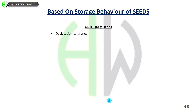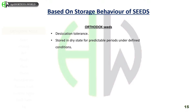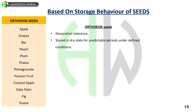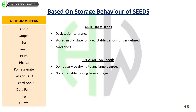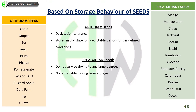Lastly, classification based on seed storage. Orthodox seeds are desiccation tolerant during development and may be stored in a dry state for predictable periods under defined conditions. Examples are apple, grapes, bael, peach, plum, falsa, pomegranate, passion fruit, custard apple, date palm, fig, and guava. Recalcitrant seeds do not survive drying to any large degree and are thus not amenable to long-term storage. Examples are mango, mangosteen, citrus, jackfruit, loquat, litchi, rambutan, avocado, Barbados cherry, carambola, durian, breadfruit, and cocoa.